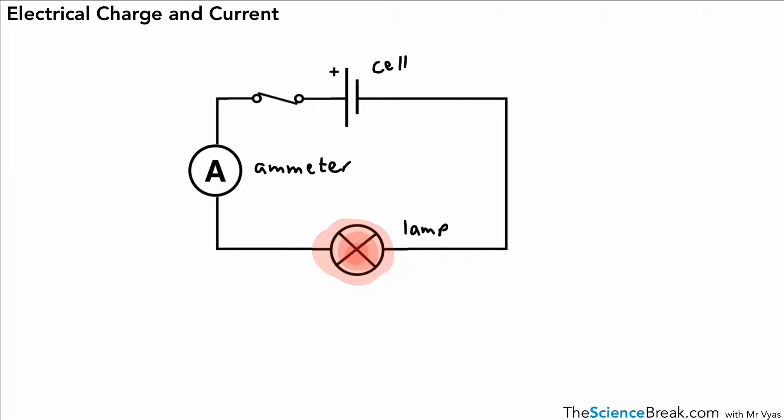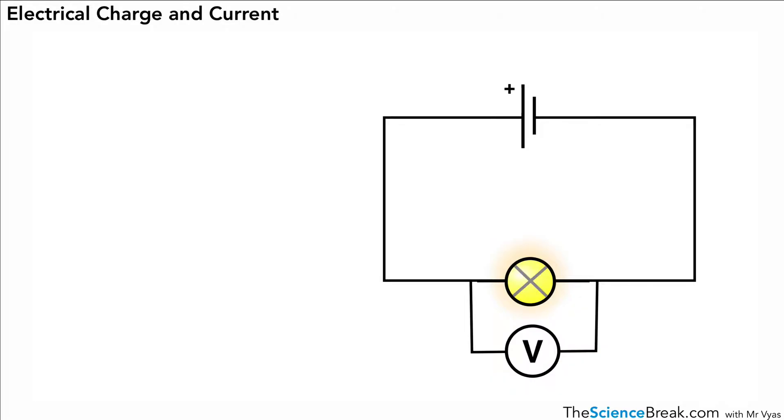But what actually is happening in terms of the flow of current through the circuit? Well, we can look at a very similar circuit here. It's pretty much the same as the last one. We've got a voltmeter there measuring potential difference across the lamp. But we can focus in on one particular area there in blue. You might not be able to see it, but let's just blow that area up there.